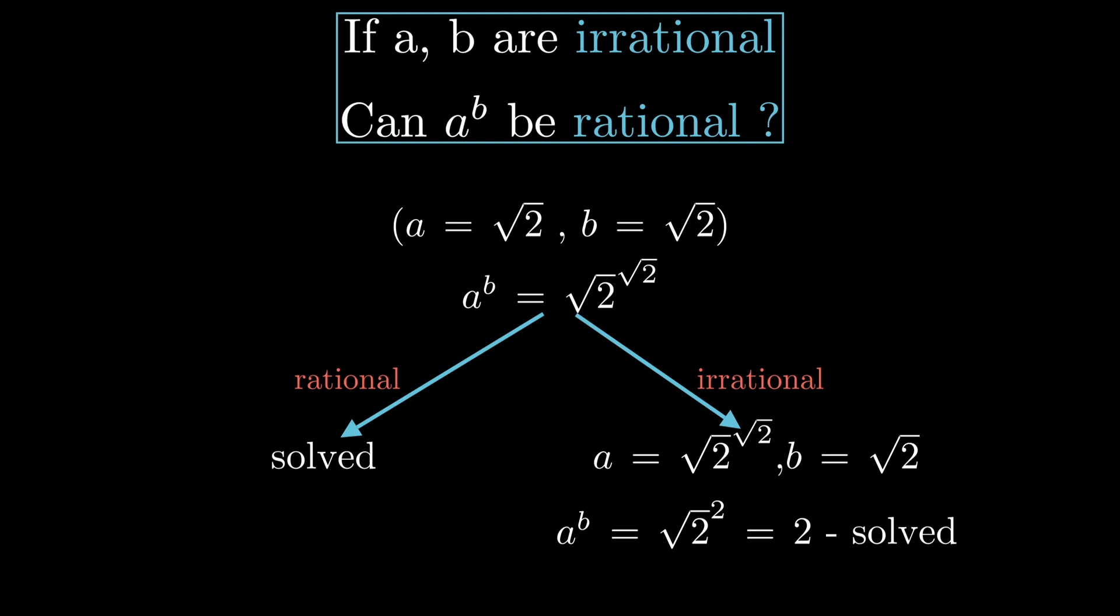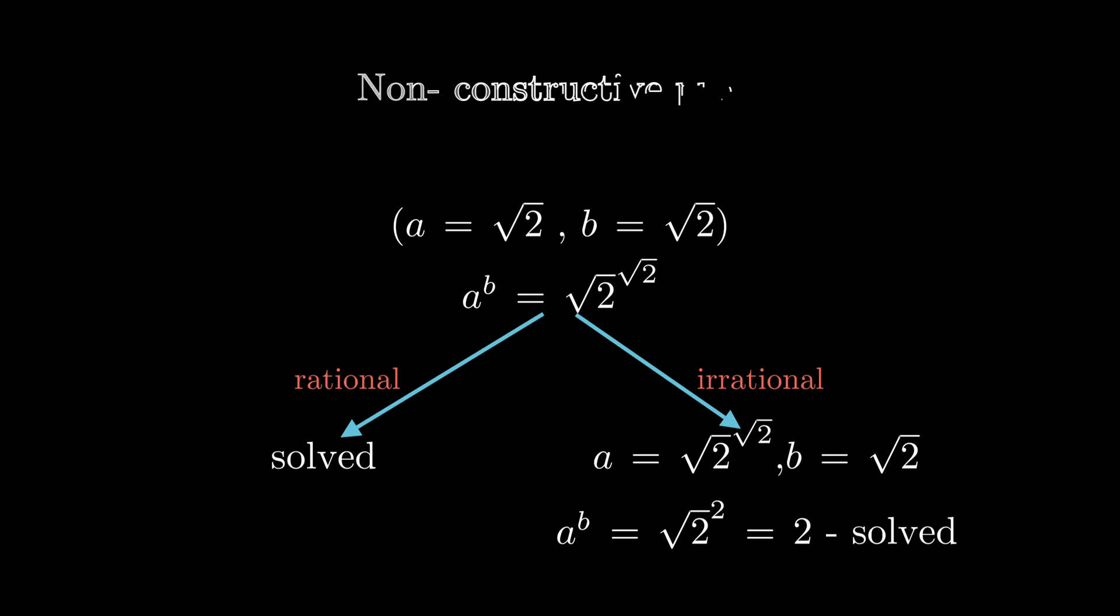Therefore, we answer the question affirmatively. We witness something called non-constructive proof, because we demonstrate existence of suitable numbers without providing a concrete example. We don't need to know whether this number is rational or not, because all the logical chains end up with the same conclusion.